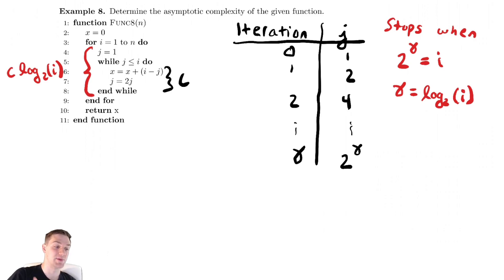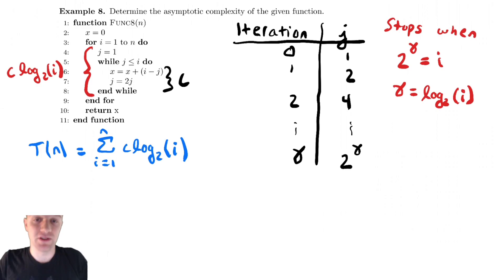So, to express the total runtime, T(n), that is equal to the summation from i equals 1 to n of c log base 2 of i. And this time, unfortunately, we do not have a nice formula for that summation. So, we're going to have to bound it above and below.